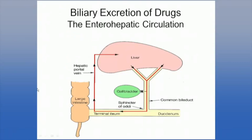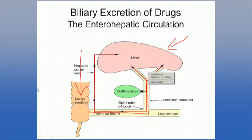To understand biliary excretion of drugs, we're going to return to something introduced in the first class: the enterohepatic circulation. This requires an understanding of some basic anatomy. Here we see the liver, which is the primary powerhouse through which most drugs used in clinical medicine today pass. Typically, after giving a drug by mouth, it gets absorbed from the intestine into the latter part of the bowel, through the enterohepatic circulation, and into the gut.